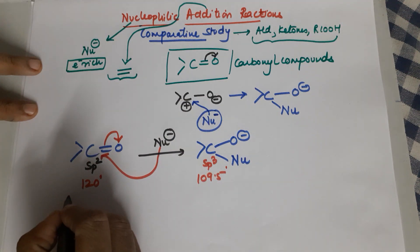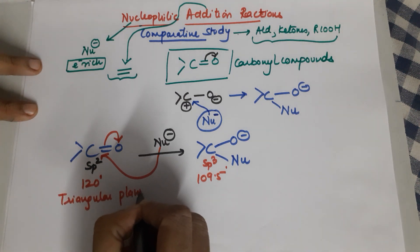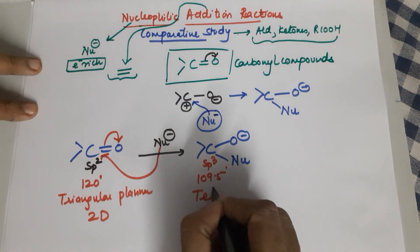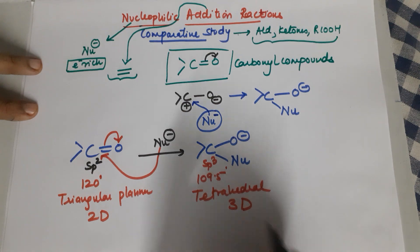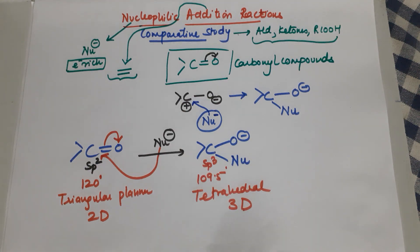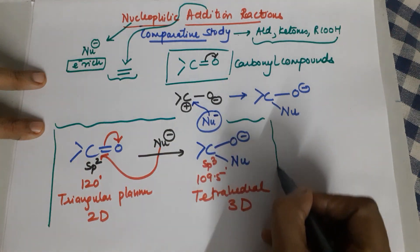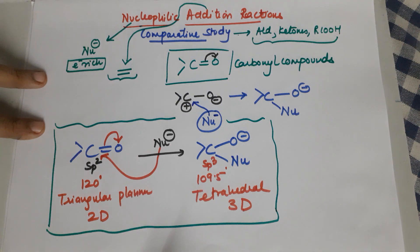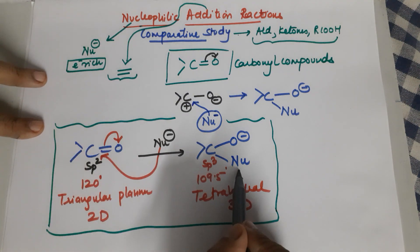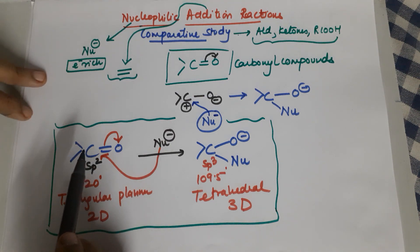The carbon changes from sp2 to sp3, which means the bond angle goes from 120° to 109.5°. The geometry changes from triangular planar — a 2D geometry — to tetrahedral 3D geometry. This stereochemical aspect, including the change in hybridization, geometries, and bond angles, is very important to understand for nucleophilic addition reactions on carbonyl compounds.